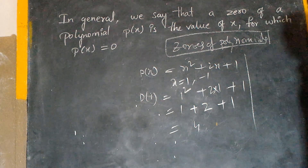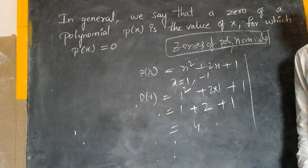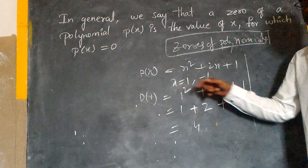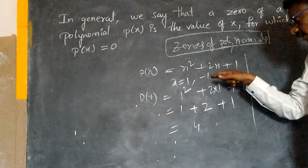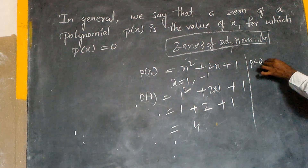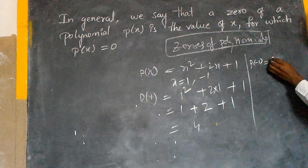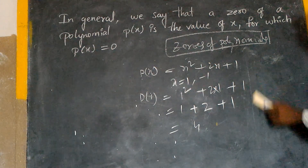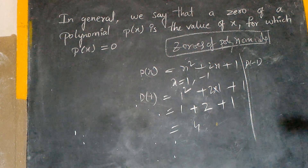X is equal to minus one. So, P of x depends upon x. X is equal to three. So, P of minus one. Here is the minus one. Here is the minus one square — very, very important. Here is the number. Three. P of minus one.